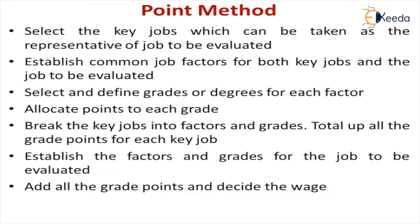The next method is the point method, where weightage is given to a particular job by dividing into grades. Select the key job, assign factors, and divide those factors into grades. For example, quality percentage 100 is grade 1, 98 is grade 2, 96 is grade 3. For every grade point obtained, the wage is fixed. If you get 80 grade points total, this is the wage; if only 50 grade points, then a lower wage is decided. A relationship is established between the entire grade points and the wages.